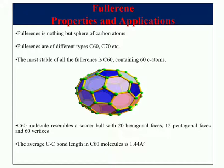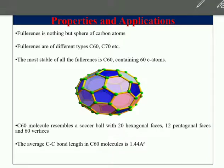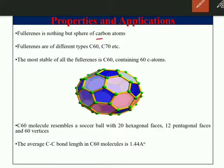Fullerenes are the latest addition to the well-defined allotropes of carbon, after diamond and graphite. Fullerene is a sphere of carbon atoms, as you can see on the screen. It is named after the person who discovered it — Buckminster Fuller. Fullerenes are of different types: C60, C70, C80, depending upon the number of carbon atoms.